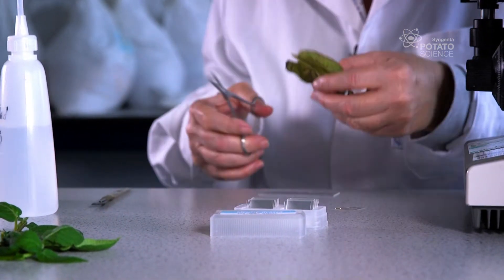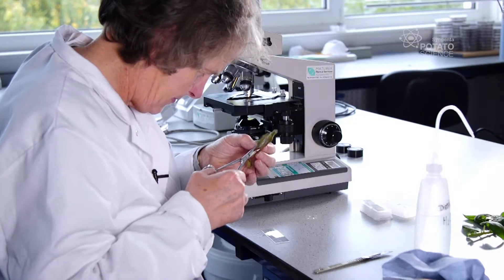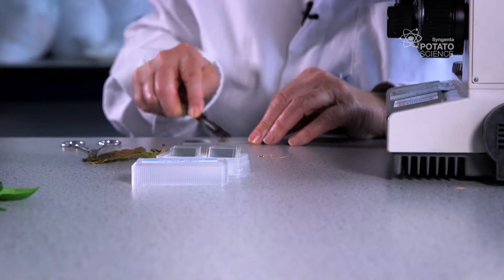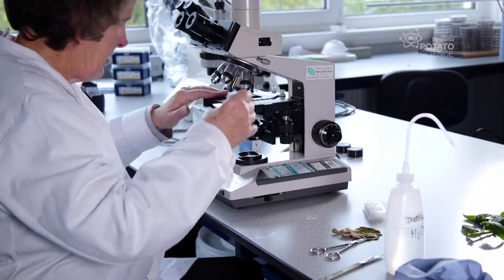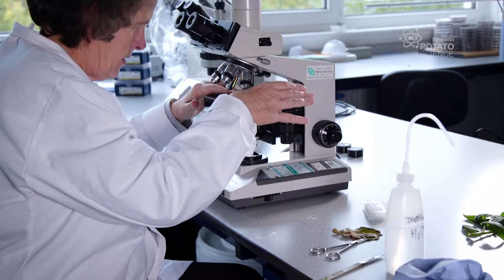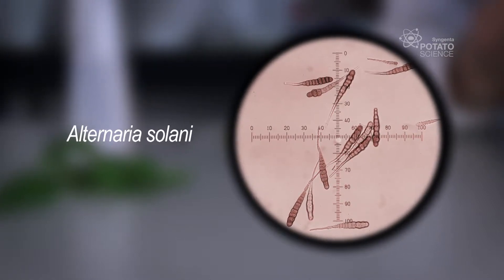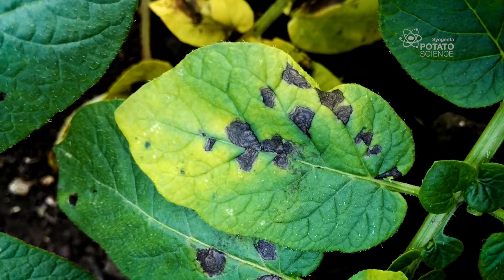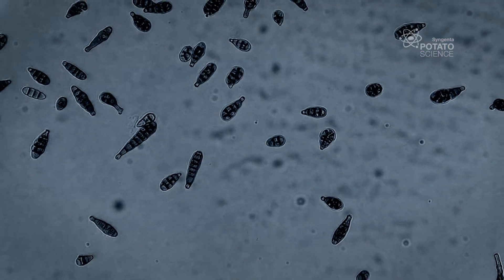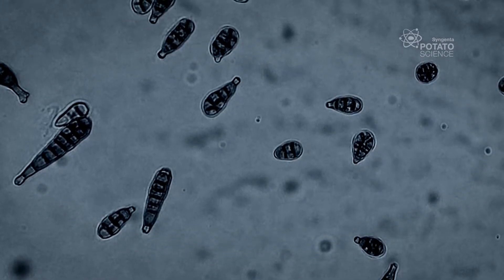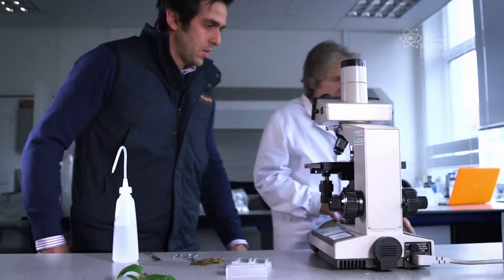The project has been going very well. We've had a lot of samples sent in from growers. Alternaria solani is very characteristic indeed — it produces long beaked spores which are very distinctive. We're also finding a lot of Alternaria alternata, and that produces short, club-shaped spores which are much smaller than Alternaria solani and don't have a long beak or tail on them.